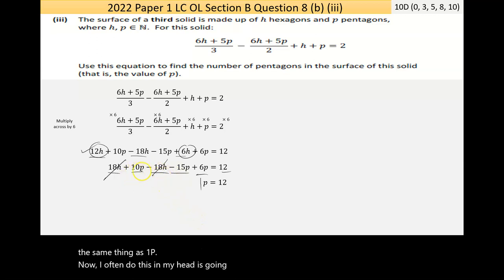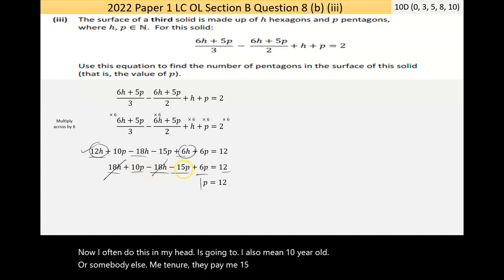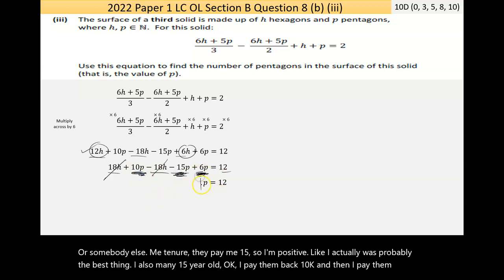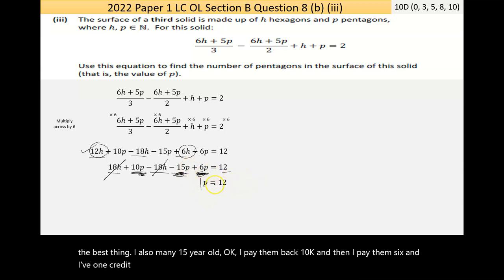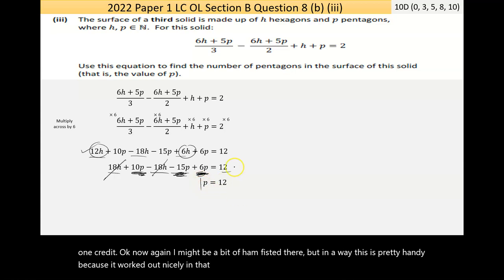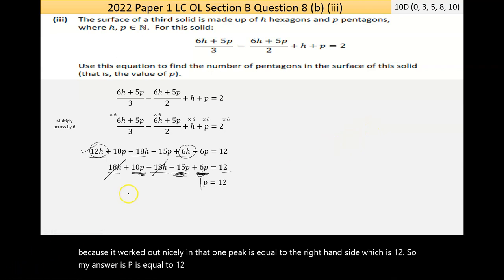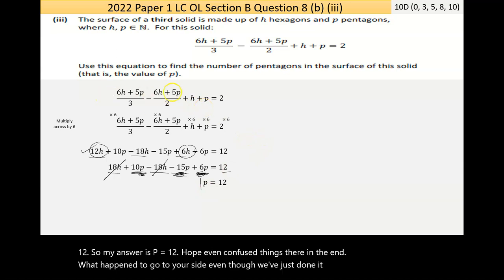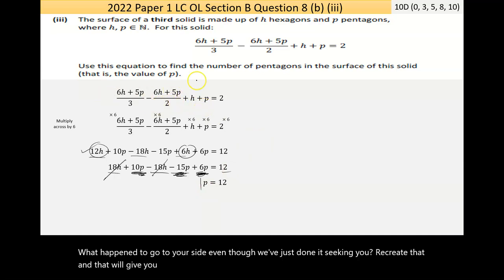So p = 12. If you want, go through it yourself even though we've just done it — recreating it will build confidence for if something like this comes up. What they're really testing is your ability to manipulate algebraic fractions, just couched in different language about shapes.